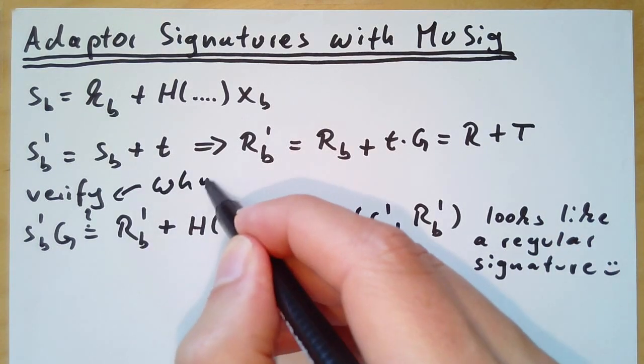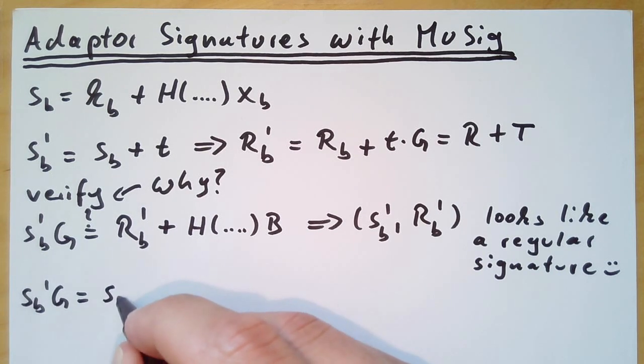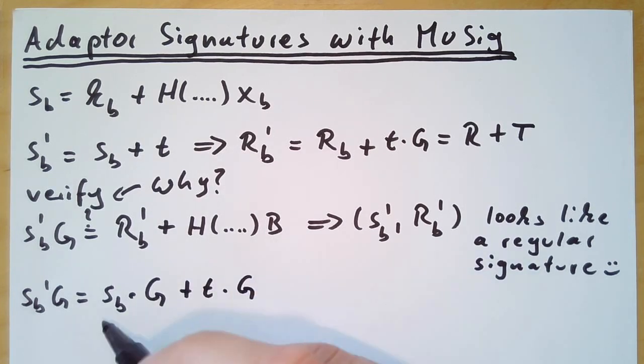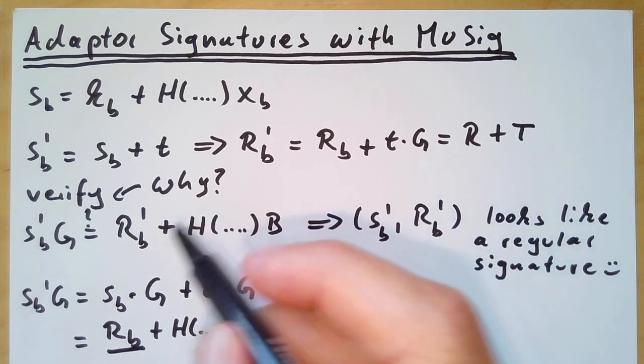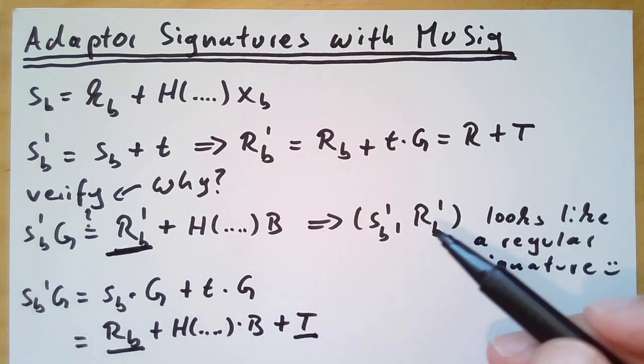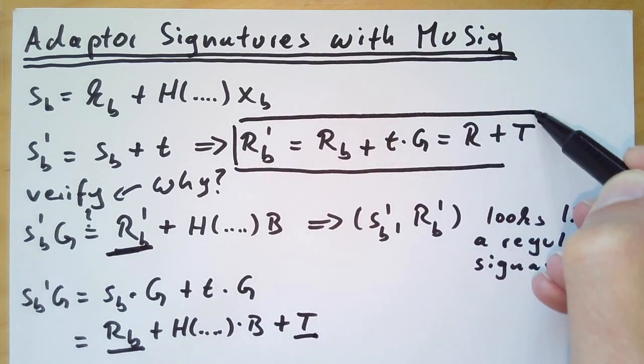Let us try to understand why this is actually the verification equation. If I write down sb' times g, this is the same as sb times g plus t times g. And sb times g, we know from our regular verification equation, has to be the same as rb plus h times b. And then t times g has to be capital T. We can already see that here we have the t value and the rb value, which is the rb' value in the signature verification equation, which is exactly what I originally claimed.